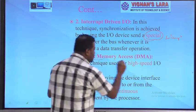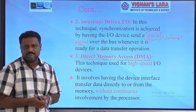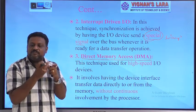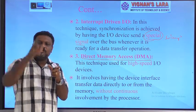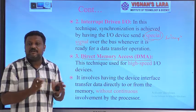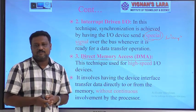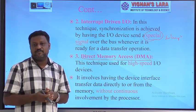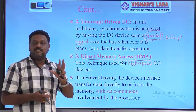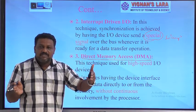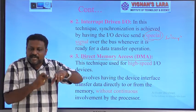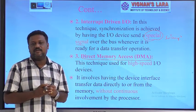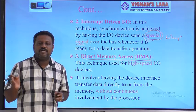The third technique is Direct Memory Access (DMA), used for high-speed I/O data transfers. In DMA, the CPU is not involved in the data transfer. The tasks that the CPU performs in the previous two techniques are now done by a separate controller called the DMA controller. With the DMA controller, the I/O device directly transfers data to memory without CPU involvement. Compared to Programmed I/O and Interrupt-driven I/O, DMA is the best and fastest technique to transfer data from an I/O device to memory.